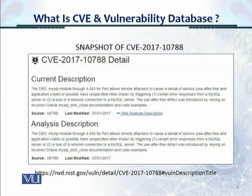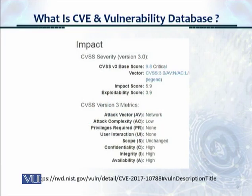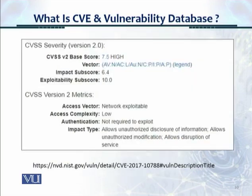Here is a snapshot of CVE-2017-10788 — that's the numbering format. It has a current description: MySQL module through 4.043 for Perl, and so on. It gives an analysis description of the vulnerability, a source, and when it was last modified. It also shows the CVSS severity version 3 impact: a criticality score, a vector, an impact score, and an exploitability score — how easily it can be exploited. Metrics include attack vector (network), attack complexity (low), privileges required (none), and confidentiality, integrity, and availability all rated very high. There are also CVSS severity version 2 ratings.